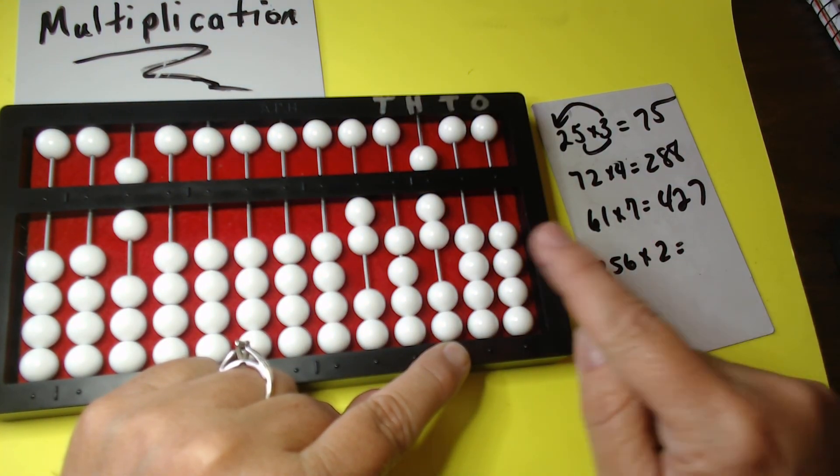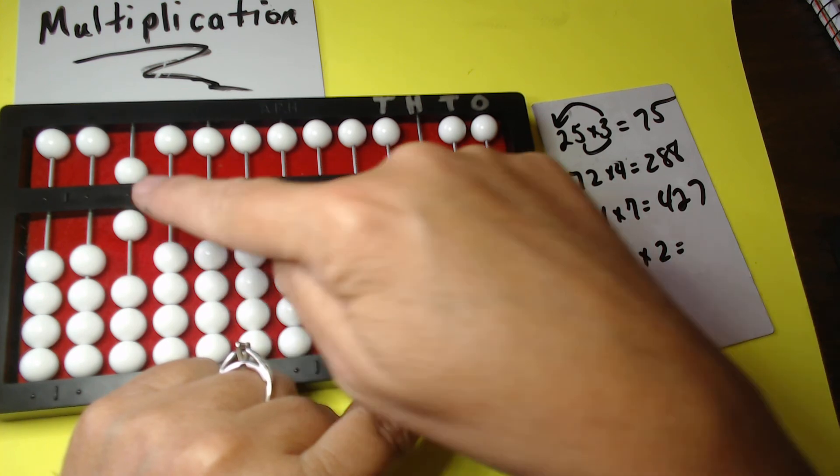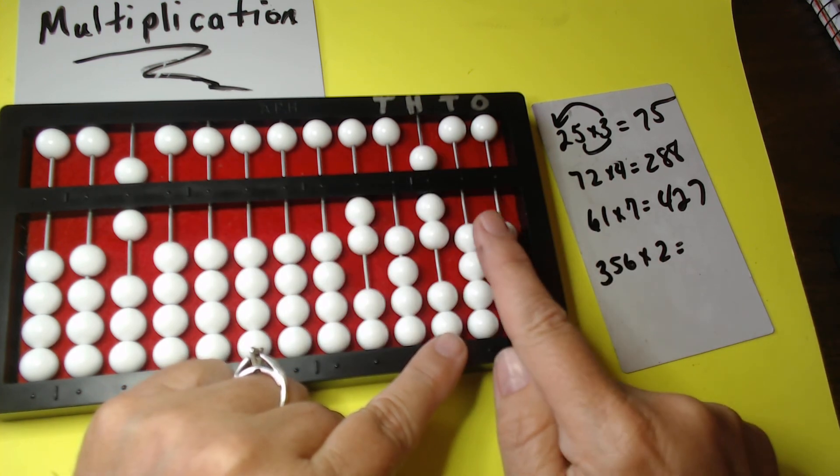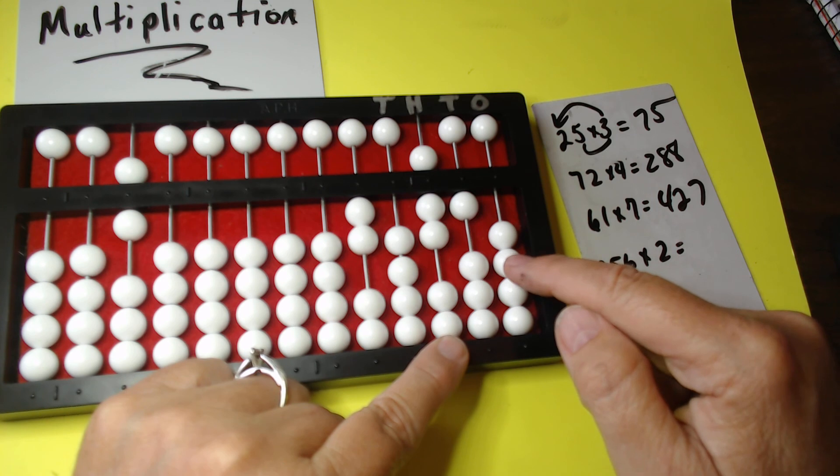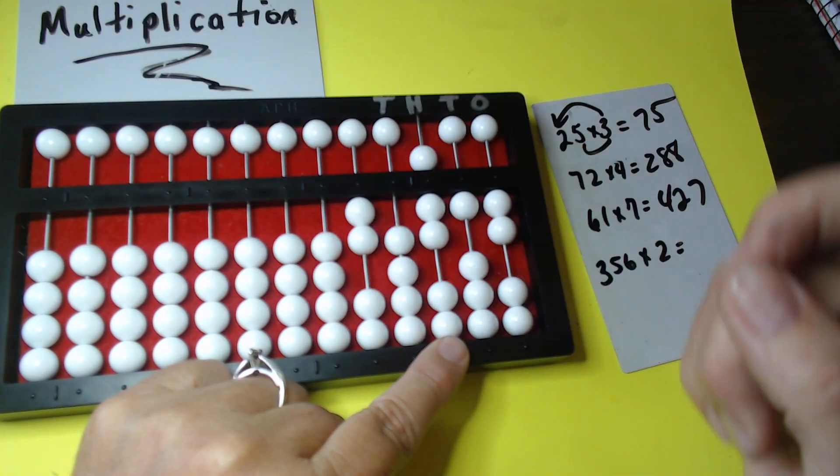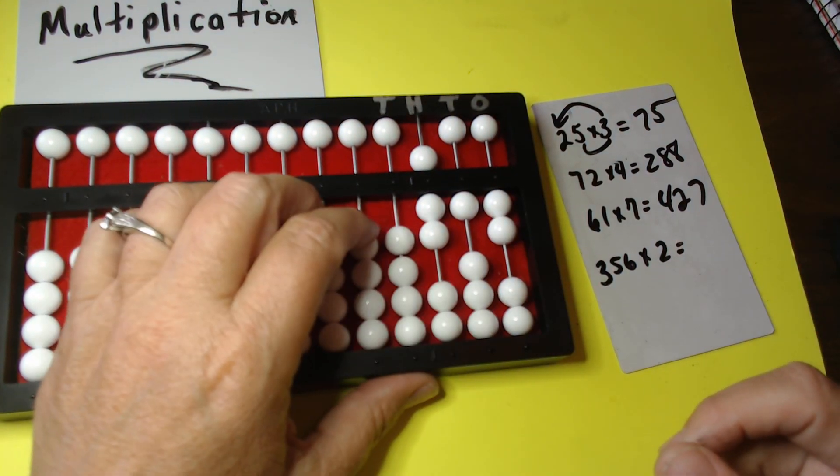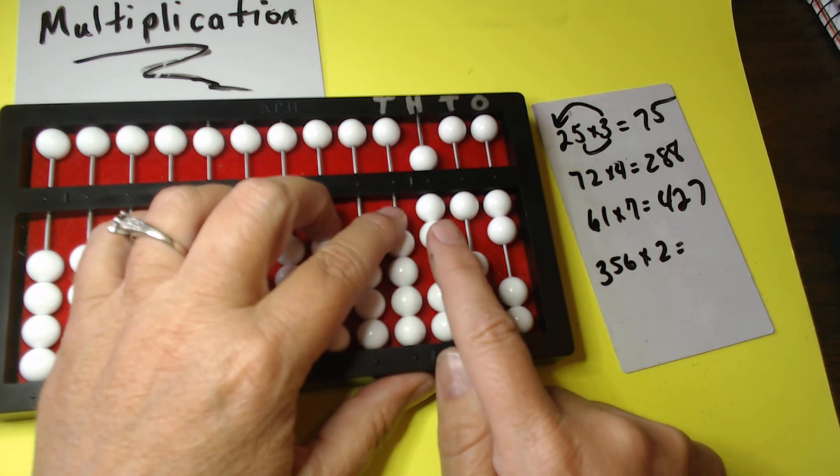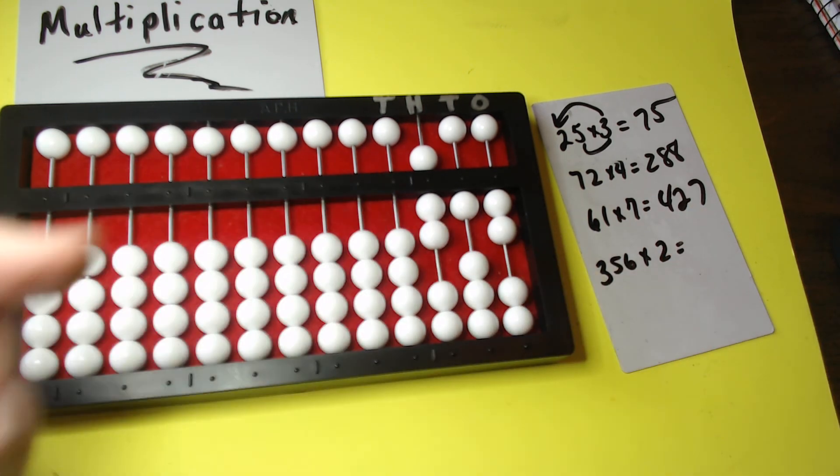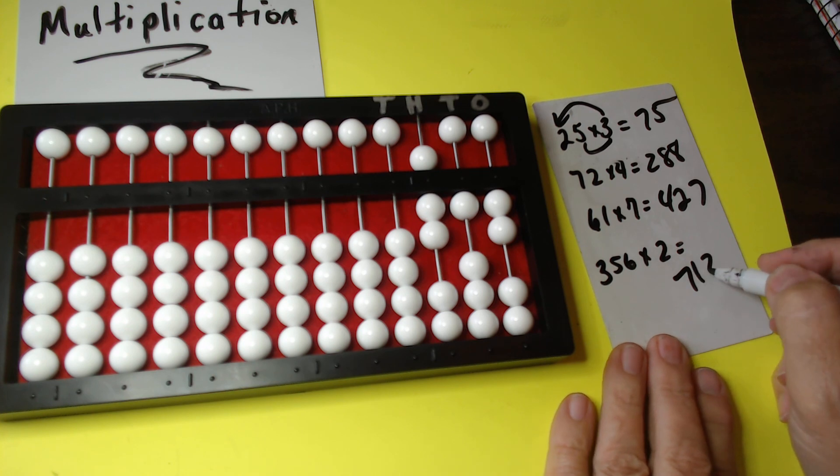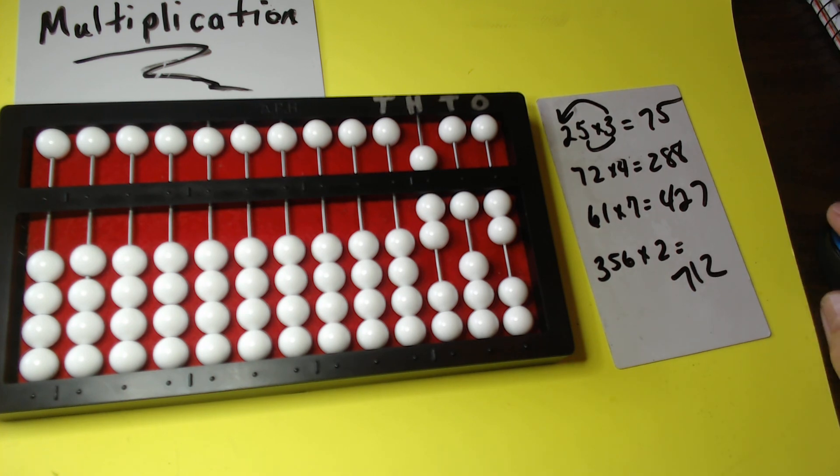Now we're going to go 2 times 6, right? This 2 times this 6 gives me 12. So I'm going to start here. 1, 2. Finish that so I can clear it. This was part of my problem. I don't need it. Here is my answer. 712. All right. That's it. Bye.